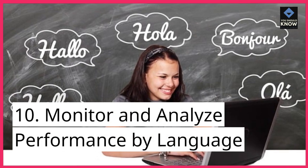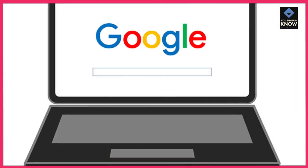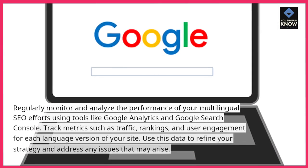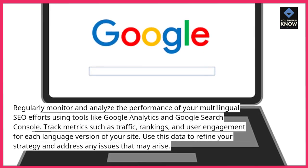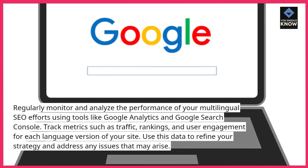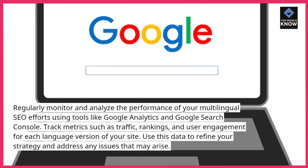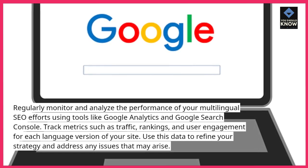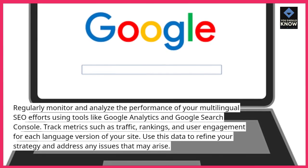10. Monitor and analyze performance by language. Regularly monitor and analyze the performance of your multilingual SEO efforts using tools like Google Analytics and Google Search Console. Track metrics such as traffic, rankings, and user engagement for each language version of your site. Use this data to refine your strategy and address any issues that may arise.